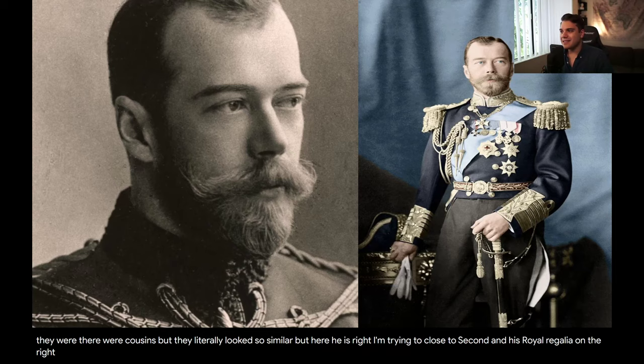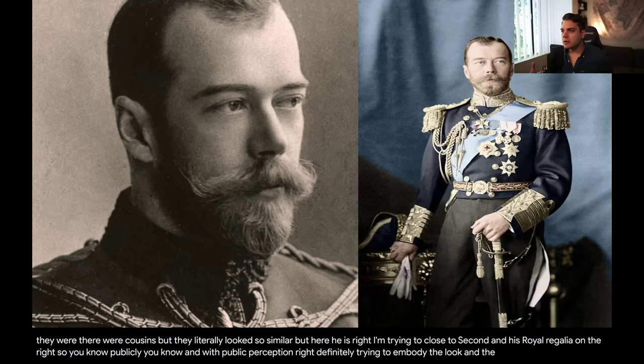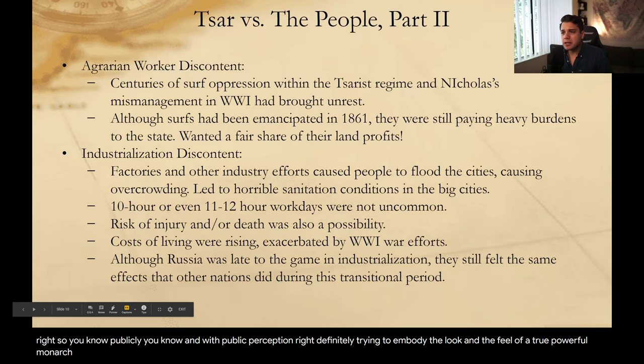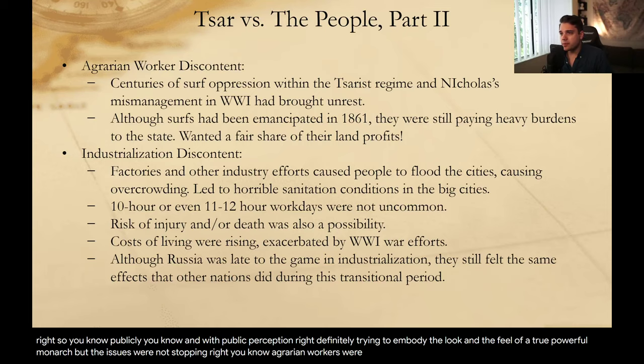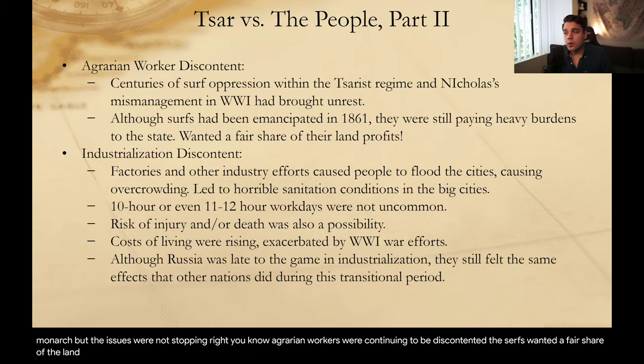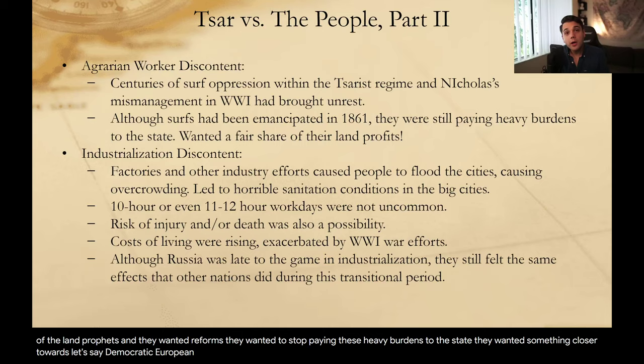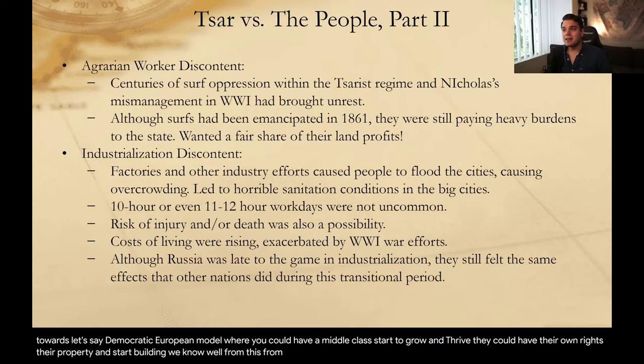Here is Tsar Nicholas II in his royal regalia — on the right-hand side in his naval officer uniform. Publicly, and with public perception, he was definitely trying to embody the look and feel of a truly powerful monarch. But the issues were not stopping. Agrarian workers were continuing to be discontented. The serfs wanted a fair share of the land profits and wanted reforms. They wanted to stop paying these heavy burdens to the state — something closer towards a democratic European model where a middle class could grow and thrive, with their own rights, property, and wealth.